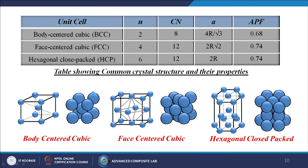Overall comparison: for BCC, N = 2, CN = 8, lattice parameter A = 4R/√3, APF = 0.68. For FCC, N = 4, CN = 12, A = 2R√2, APF = 0.74. For HCP, N = 6, CN = 12, A = 2R, APF = 0.74.